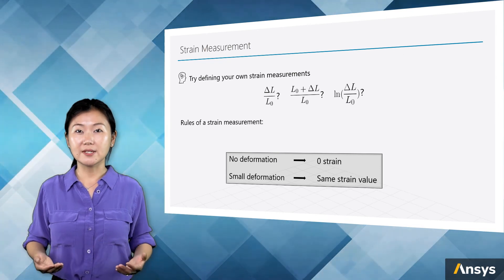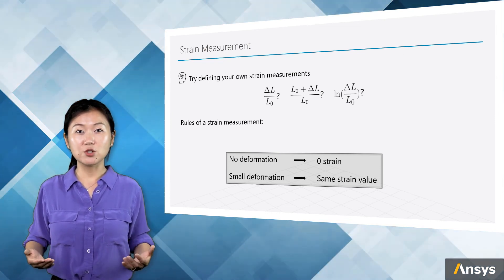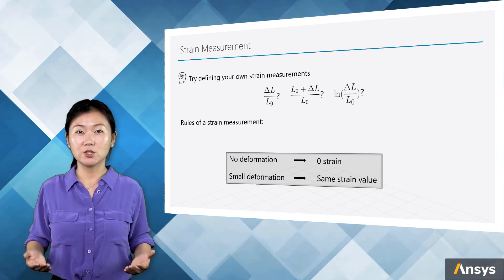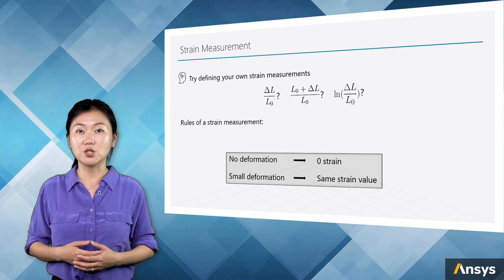Rule number one is, as a strain measurement, when there is no deformation, the strain value should be absolutely zero. So when the part of the body remains undeformed, the strain quantity should read as zero.